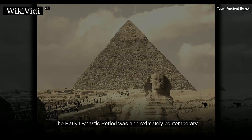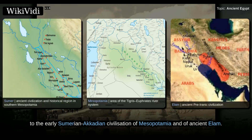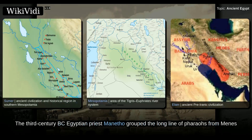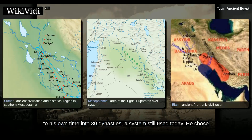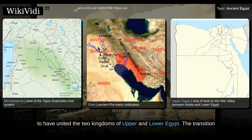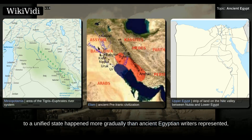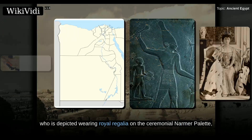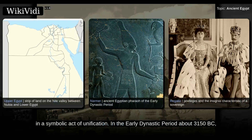The Early Dynastic Period was approximately contemporary to the early Sumerian-Akkadian civilization of Mesopotamia and of ancient Elam. The 3rd century BC Egyptian priest Manetho grouped the long line of pharaohs from Menes to his own time into 30 dynasties, a system still used today. He chose to begin his official history with the king named Menes, who was believed to have united the two kingdoms of Upper and Lower Egypt. The transition to a unified state happened more gradually than ancient Egyptian writers represented, and there is no contemporary record of Menes. Some scholars now believe, however, that the mythical Menes may have been the pharaoh Narmer, who is depicted wearing royal regalia on the ceremonial Narmer palette, in a symbolic act of unification.